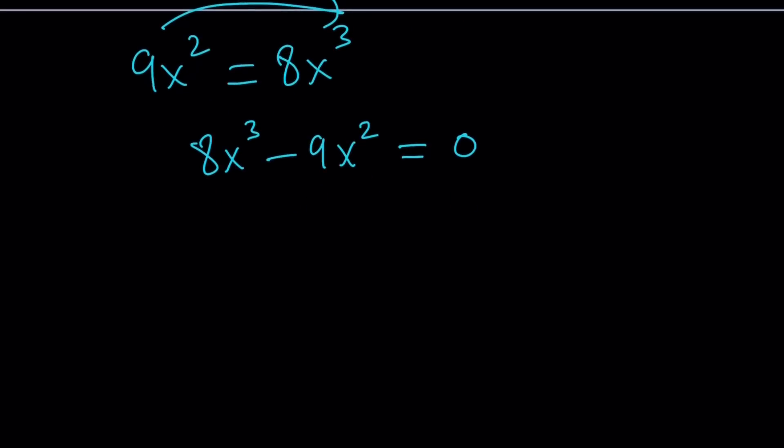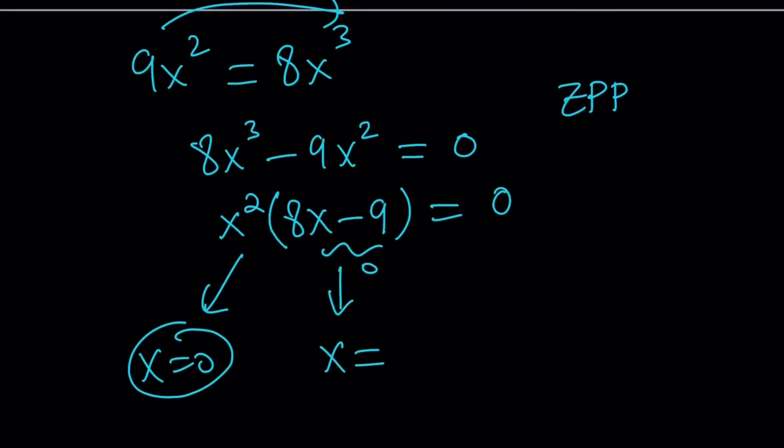8x³ minus 9x² equals 0. What do you do next? Factor. Take out the greatest common factor, which is x², and then you get 8x minus 9 equals 0. From here, by using zero product property, you can set each factor equal to 0. If you set this equal to 0, you get x equals 0. If you set this equal to 0, you get x equals 9 over 8.